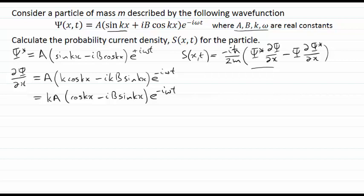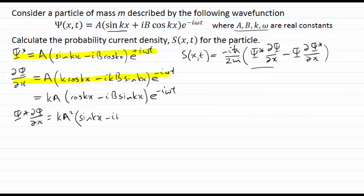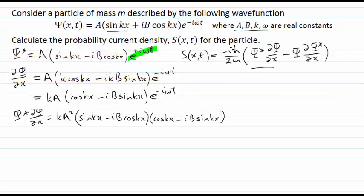Now I want to combine ψ* and dψ/dx. For this first term, ψ* dψ/dx, I can see I'm going to get k times a² at the front. From ψ* I'll have (sine kx minus ib cosine kx), and from dψ/dx I'll have (cosine kx minus ib sine kx). You can see that the e^{+iωt} and e^{-iωt} multiply through to give one, so they disappear in this calculation.